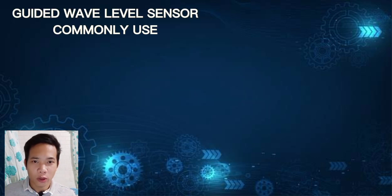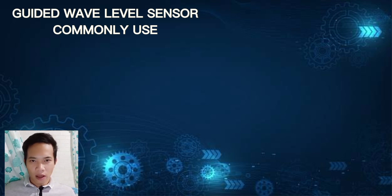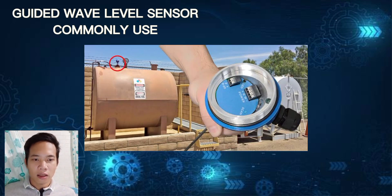Where does the guided wave level sensor typically use? The guided wave level sensors are commonly used to monitor the level of liquids in storage tanks, including those for chemicals, oil, water, and more. They can also be employed in vessels used in various manufacturing processes.